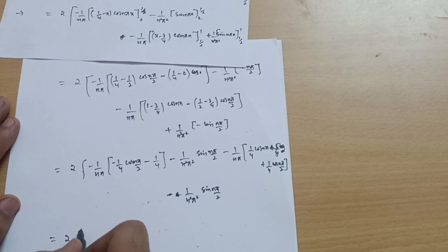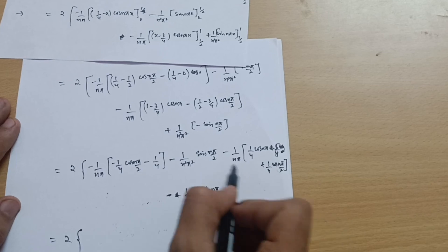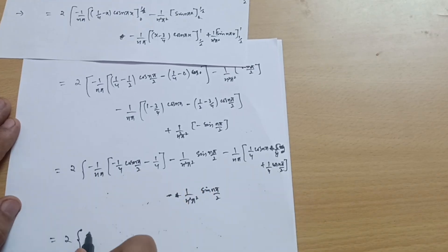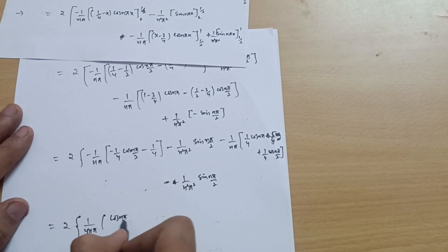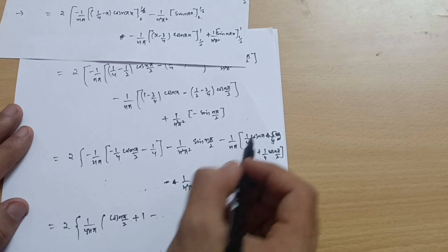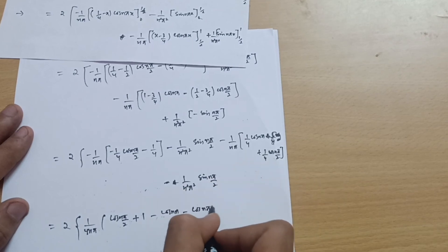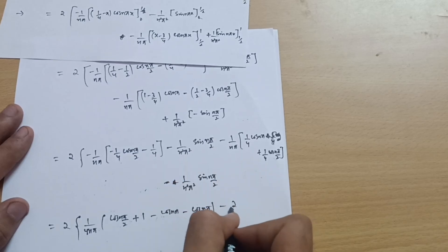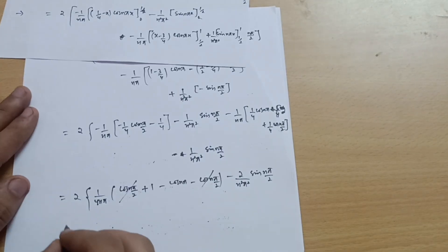Grouping the cos(nπ/2) terms: the +1/4 and −1/4 terms cancel. The remaining cos terms give (1/4nπ)·(1 − cos(nπ)). The sin(nπ/2) terms combine: −(1/n²π²) − (1/n²π²) = −2/(n²π²)·sin(nπ/2). So bn = 2 × [(1/4nπ)·(1 − cos(nπ)) − (2/n²π²)·sin(nπ/2)].